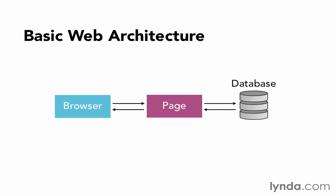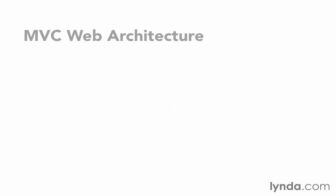And if it's database-enabled, it can interact with the database, pull information out, and then return that back to the browser. But the code to do all of these things is in one page, a single long script. The MVC architecture breaks that single page up by function.